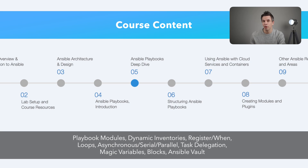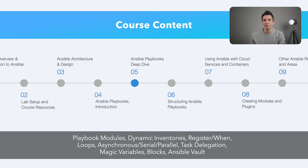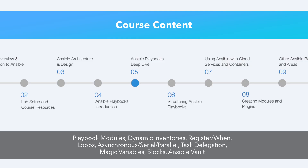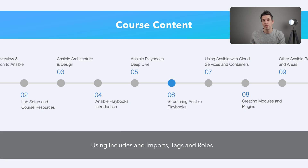In section 5, we'll take a look at some of the more common playbook modules, dynamic inventories — both how to use them and how to create them — the use of register and when for capturing information, the various ways of using loops, performance aspects with different means of execution such as asynchronous, serial and parallel, task delegation, Ansible's magic variables, Ansible blocks, and the Ansible vault for securing information. In section 6, we'll see how we can structure Ansible playbooks through the use of includes and imports, tags that allow us to reuse specific entities, and roles where we can break our tasks into reusable components.